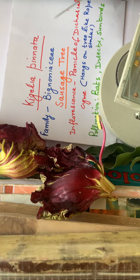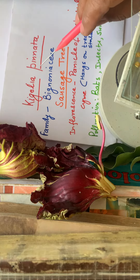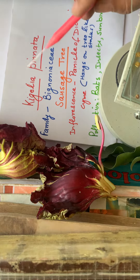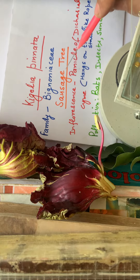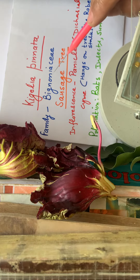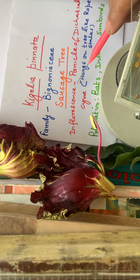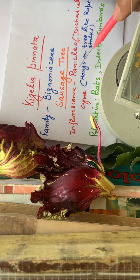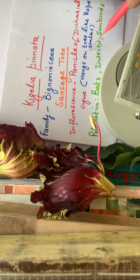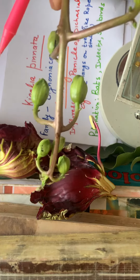Dear students, welcome to SETI Botany Classes. Today in this video, we will study about the flower of Kigelia pinnata. Its common name is sausage tree. This belongs to family Bignoniaceae and its inflorescence is the panicle of dichasial cyme. This hangs on the tree like rope stalks. Now this is its inflorescence.